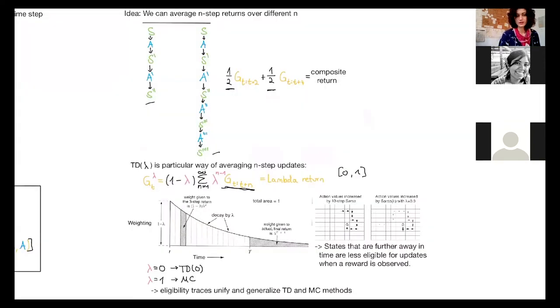So, because if we have lambda 0, we just take the one-step return and everything else is multiplied with 0 and disappears. And if that's like TD 0, and if we have lambda 1, we just sum up all the n-step returns until the termination, which is like Monte Carlo.